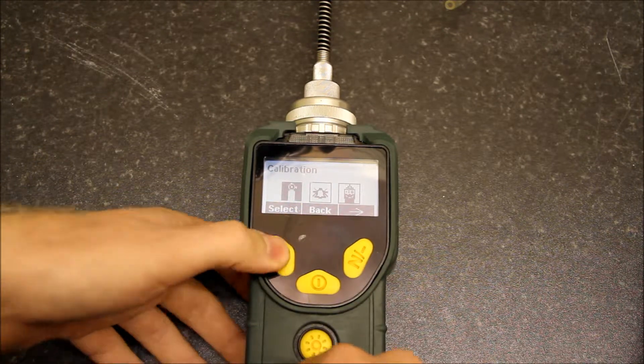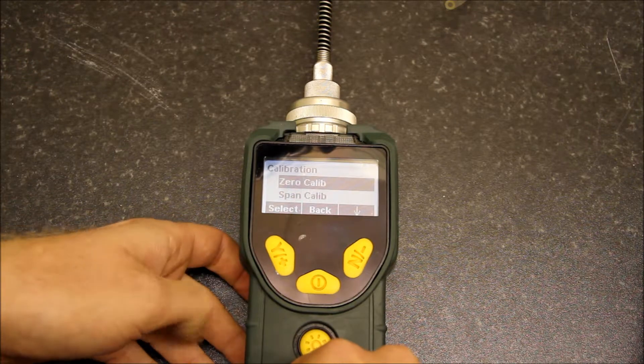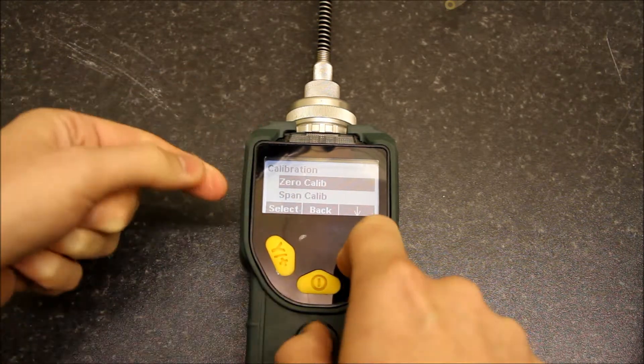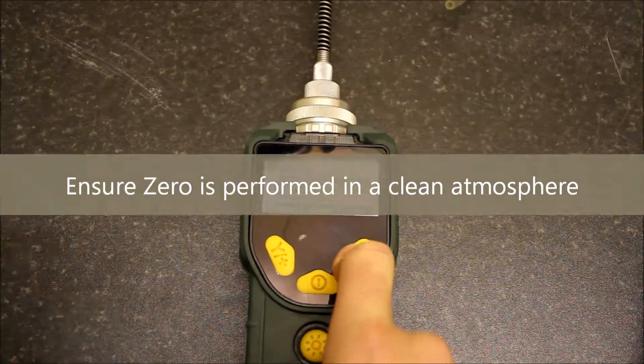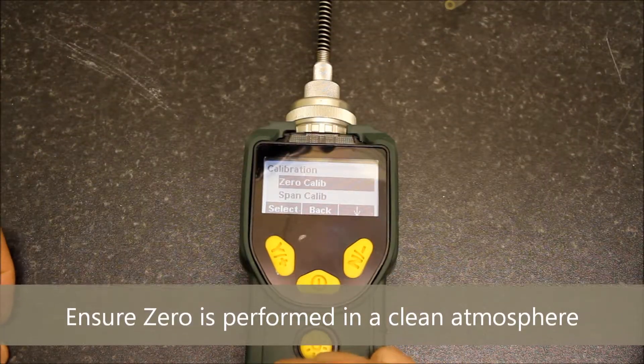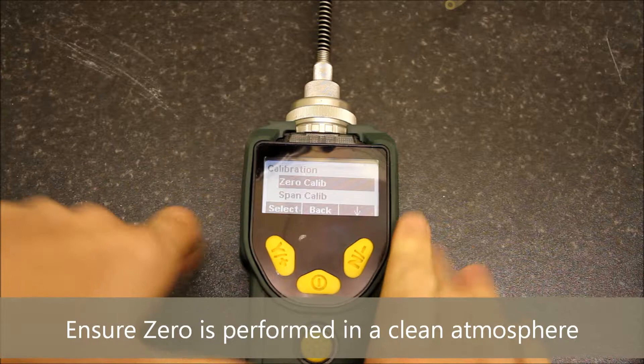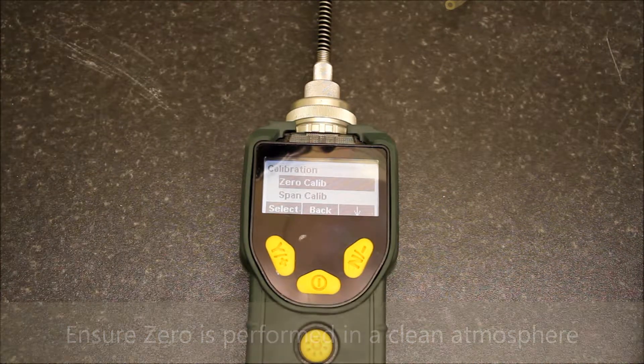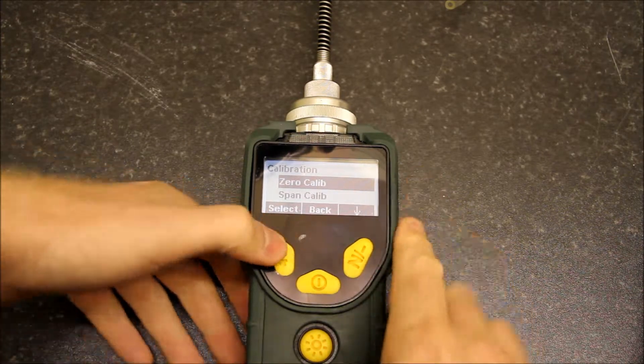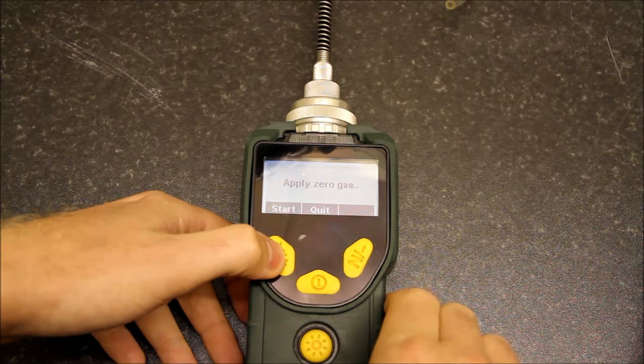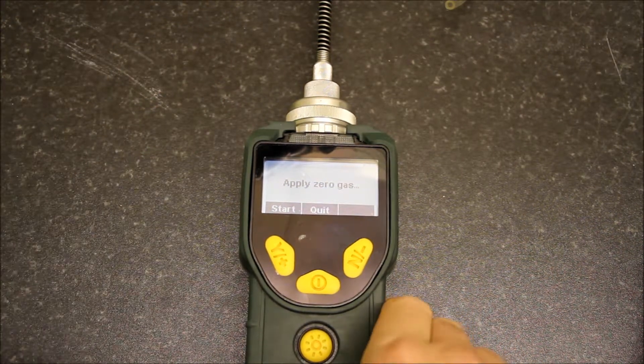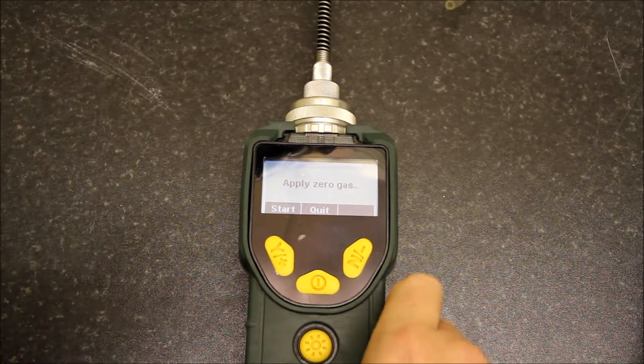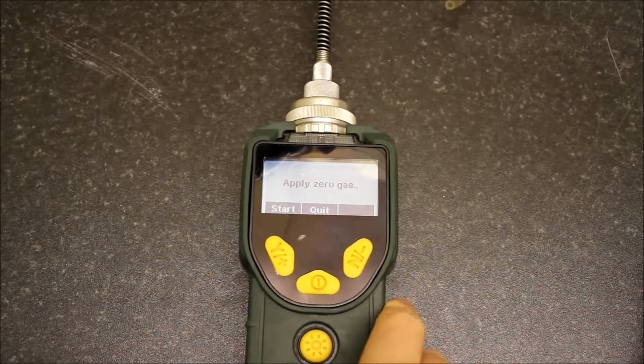Under the calibration menu, we've got zero calibration, span calibration, and bump. We're going to do a quick zero calibration. My monitor has been running for 15 minutes, which has allowed all the electronics to warm up. If I select zero calibration, it's asking for zero gas. Ideally we need to be in an atmosphere with no contaminants of VOC.